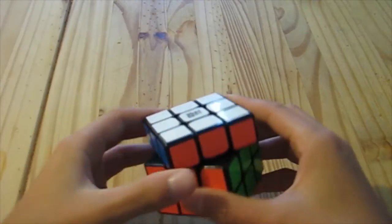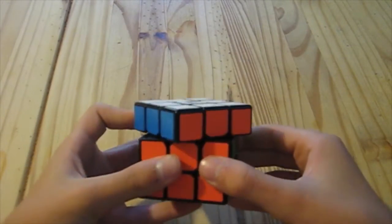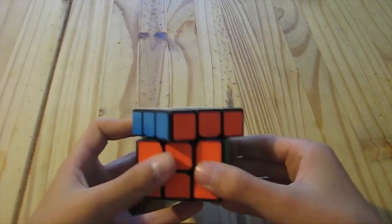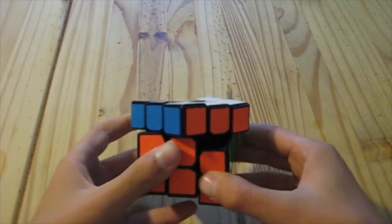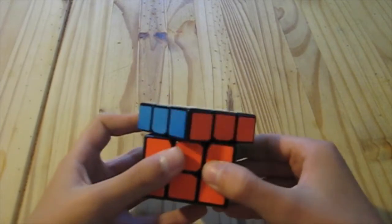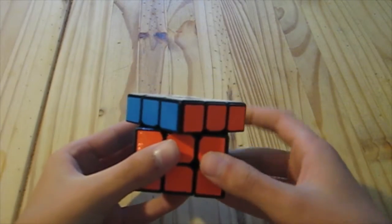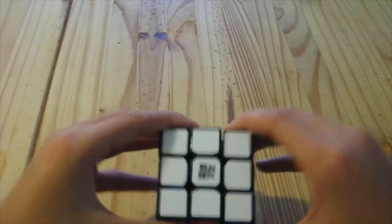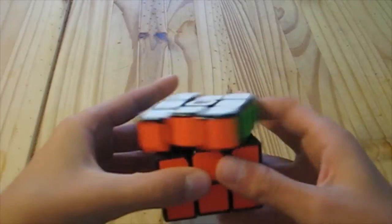Middle slices turn as well. Corner cutting is pretty good. It's doing 45 easily, over 45 with a little bit of force. Tensions are actually pretty medium.